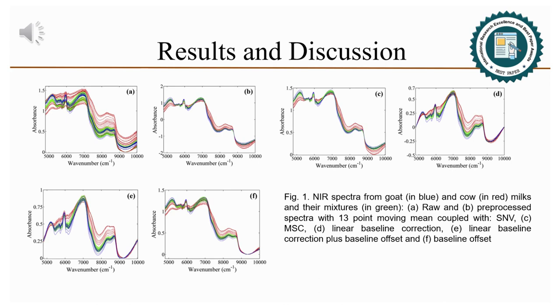Additionally, the band related with water content seems very similar in all samples, while goat milk in blue presents less variation in the regions attributed to fat and protein content when compared with cow milk in red.